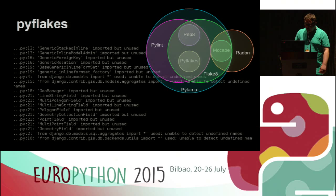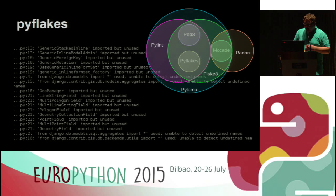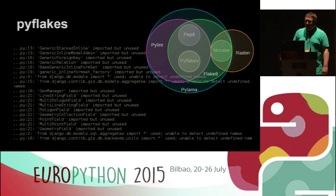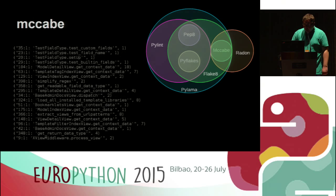Next one is PyFlakes. PyFlakes is a small checker, even smaller than PEP8, but it checks many nice things that you would usually use PyLint for — but PyFlakes is faster. It checks for unused variables and unused imports. So if you have a developer who, when creating a new module, copies a wall of imports from another file, you can check it with PyFlakes and say, 'Remove these imports.'